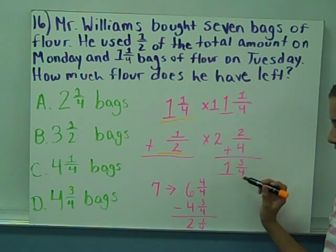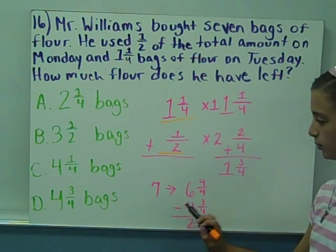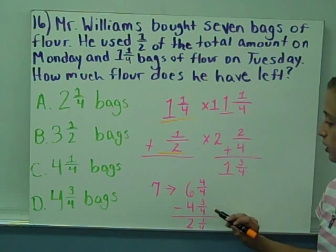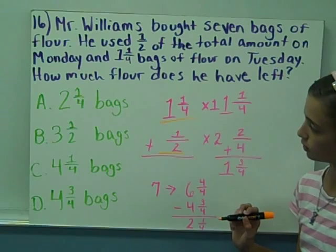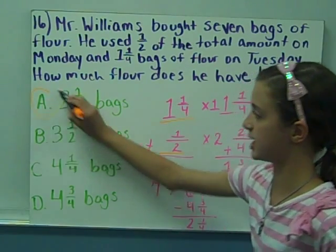Then added together is one-and-three-fourths. Then the total amount was seven, which I changed to six-and-four-fourths. Then I subtracted the total amount, and I got two-and-one-fourths, which is A.